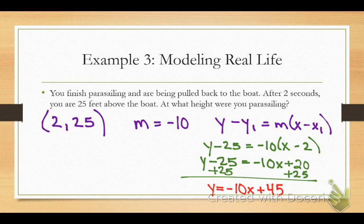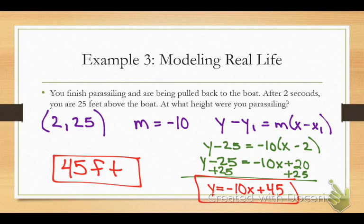Here's what this means. My y-intercept, meaning if there's no value for x, x is my time, my seconds. If I have not been reeled in at all, I'm 45 feet above. Now let's think about this practically. If you're dropping 10 feet per second and you're 25 feet after 2 seconds, you can just add 20 to that to get 45 feet. There's a couple different ways we can look at this, but this is how you would solve it if, big hint, it were on your quiz on Monday. And that's everything you need to know for section 4.7 and all of chapter 4.